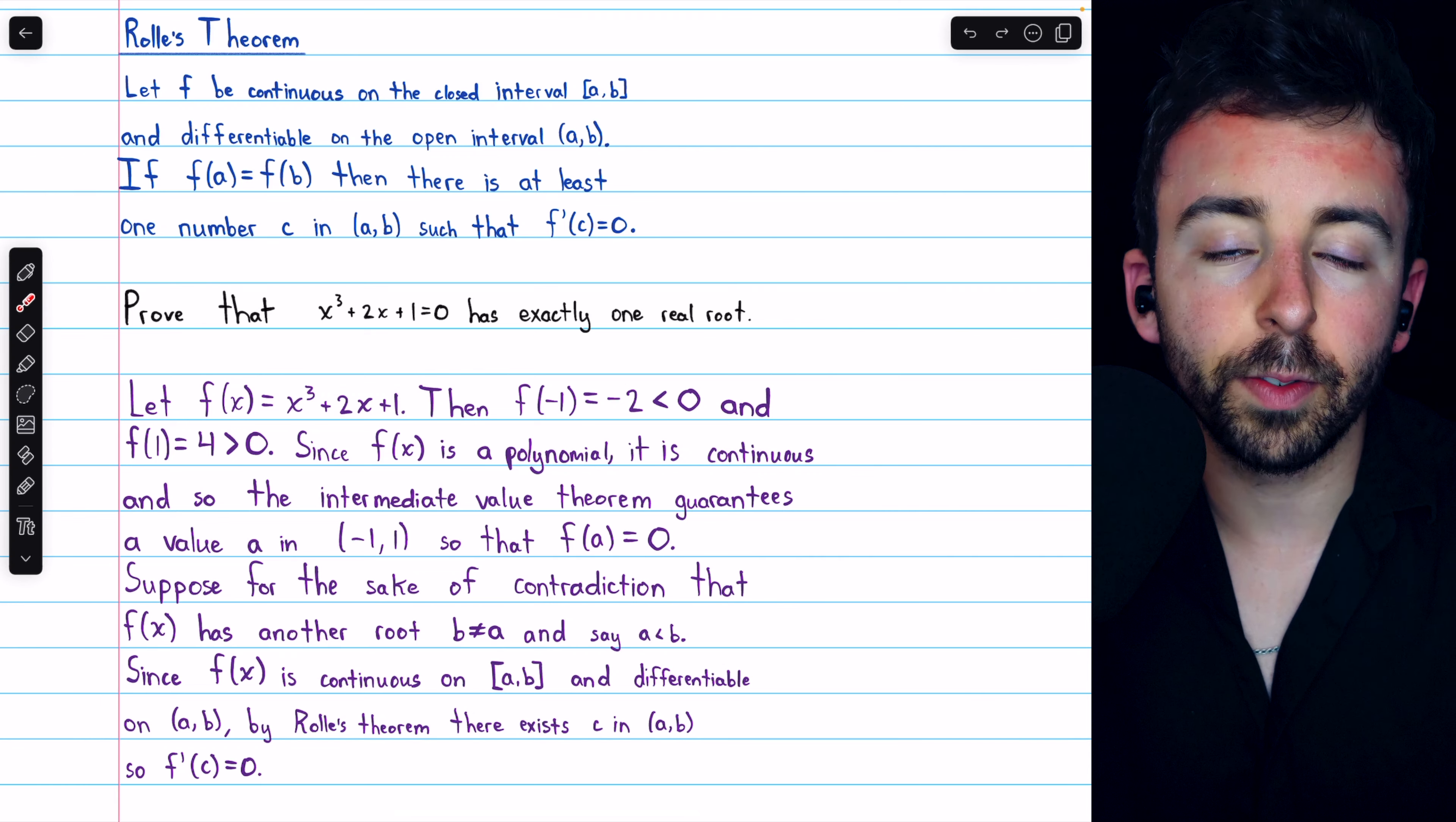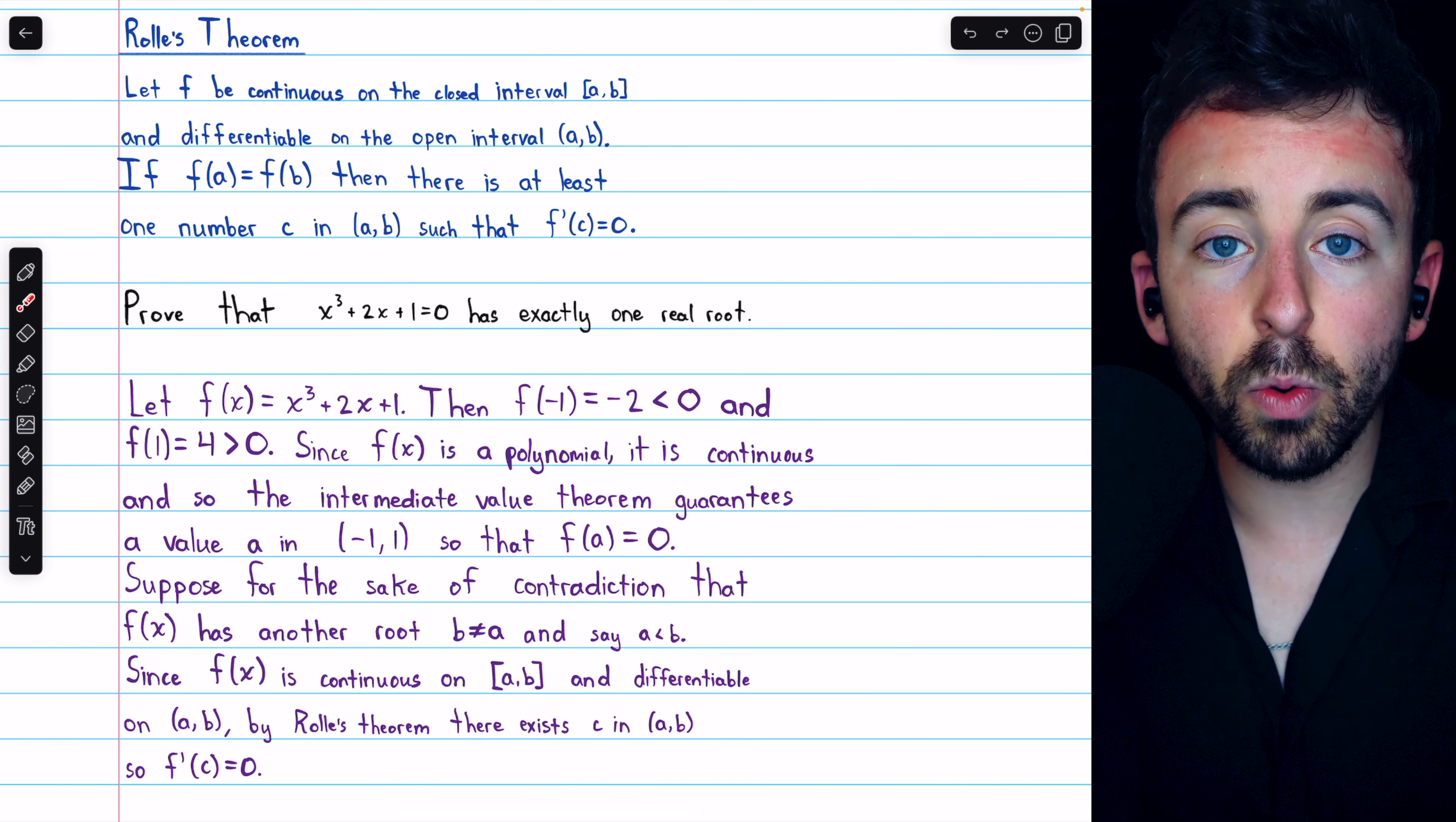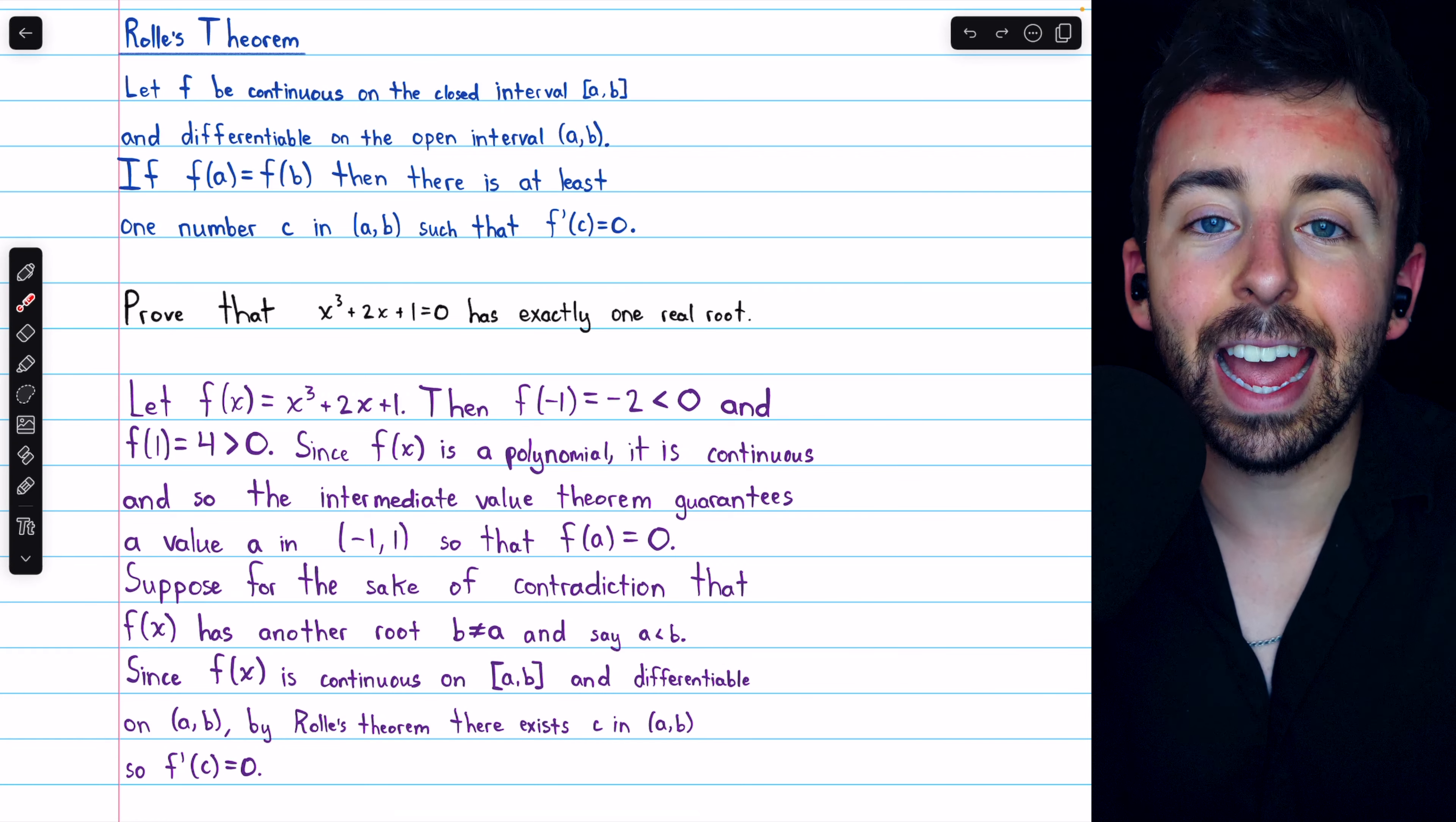So now the idea is that we're going to suppose, for the sake of contradiction, that our function does have another root. That's going to be another point at which the function's value is zero. So we'll have two values at which it's zero. We'll have that one we already know exists at x equals a, guaranteed by the intermediate value theorem, and then we'll assume we have some other one. So we've got an interval between these two values where the function's y value is the same at the endpoints. What I mean when I say that we're supposing this for the sake of contradiction is that we're assuming it's true, but we're going to show that it leads to an impossibility. And so, in fact, can't be true.